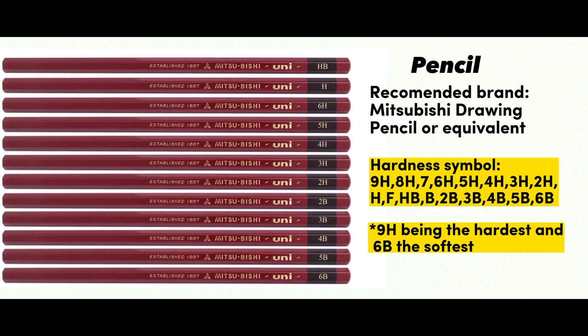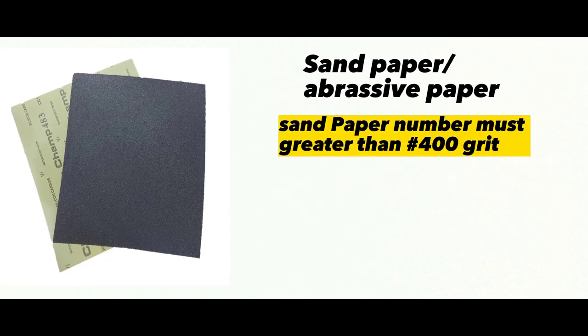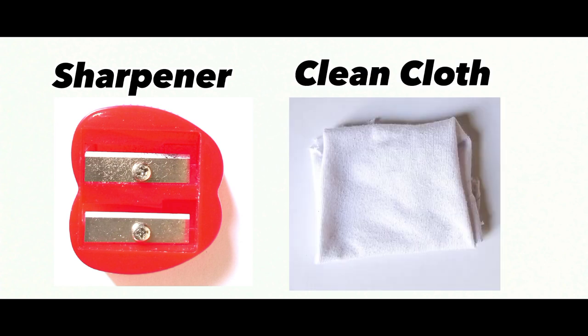The third material needed to prepare is sandpaper or abrasive paper. Sandpaper must be greater than 400 grit. The fourth material is the sharpener and the fifth is clean cloth.